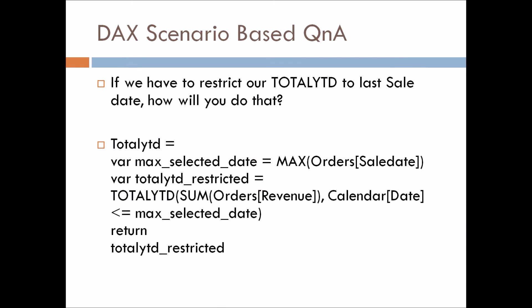Let's move to the third question: if we have to restrict our total Year-to-Date to the last sale date, how will you do that? Suppose you have a line chart with month on the X-axis and total Year-to-Date sales on the Y-axis. For 2021, it will represent sales from 1st January 2021 to the latest date in September, and after that it shows 0 — but the requirement is that it should not show 0; it should restrict to the latest date of September.